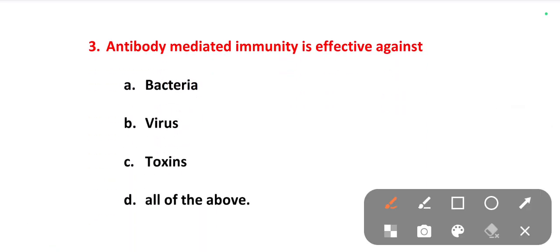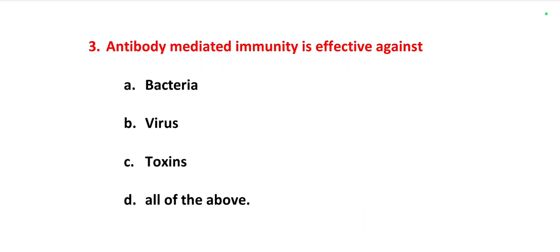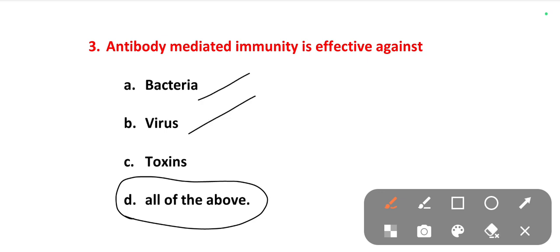The next one is: antibody-mediated immunity is effective against. Options are bacteria, virus, toxins, all of the above. The right answer is all of the above — the antibody-mediated immunity works against bacteria, viruses and toxins.